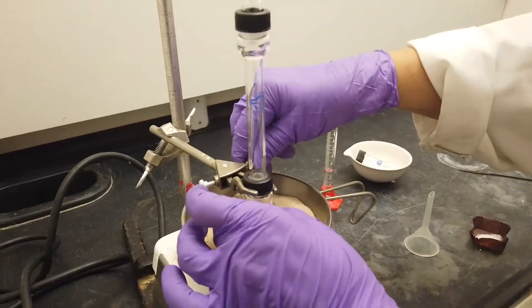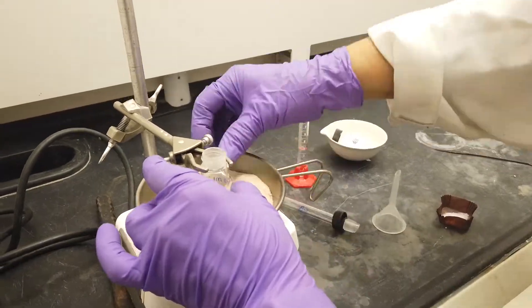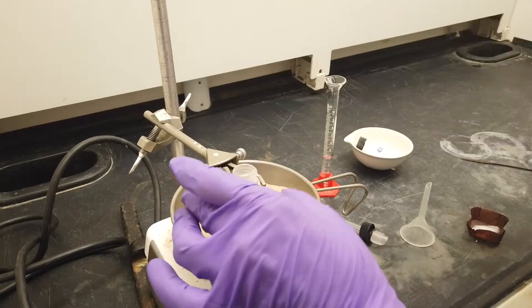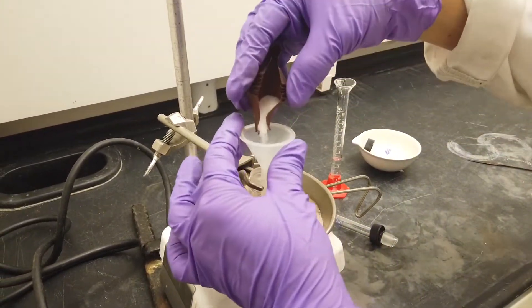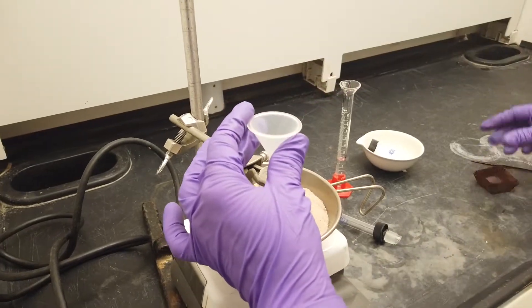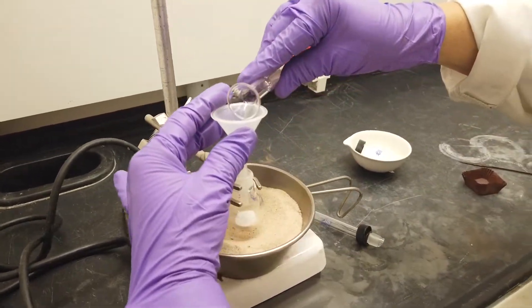Addition of solids and or liquids. Lift the apparatus out of the sand bath and remove the condenser. This will give access to the round bottom flask where solid and liquids can be added. Here, a pre-measured solid is being carefully added with a funnel followed by a pre-measured amount of liquid.